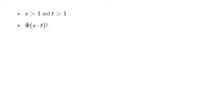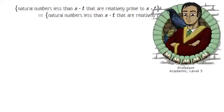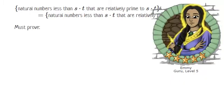To return to the proof, my claim is that the natural numbers less than and relatively prime to s times t are exactly those that are relatively prime to both s and t. In other words, these two sets are equal. Emmy, what must be proved first? If an element is in the first set, then it must be in the second.